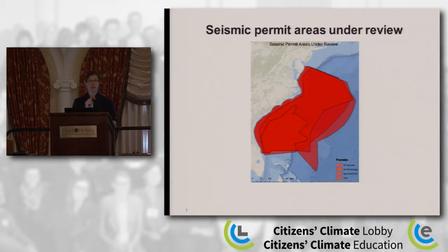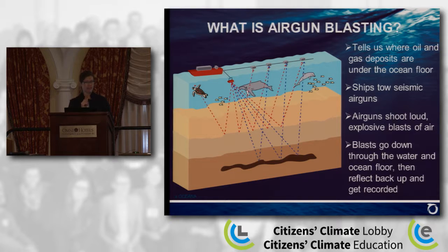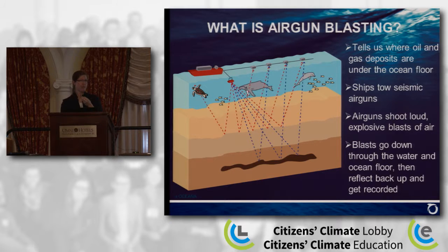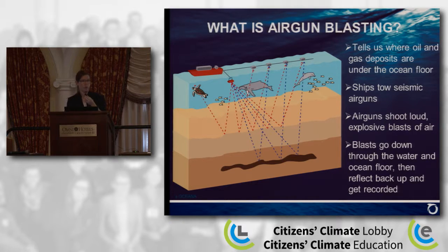The area being considered falls between Delaware and Florida, shown in red, with many important marine animal habitats within that zone. Seismic air gun blasting is used to explore where oil and gas deposits are underneath the seafloor. Ships tow air gun arrays behind them, and these air guns shoot loud, explosive blasts of bubbles and air into the water. Echoes travel down through the water column and below the seafloor, then bounce back up, allowing scientists to understand what type of oil and gas lies below the ocean floor.